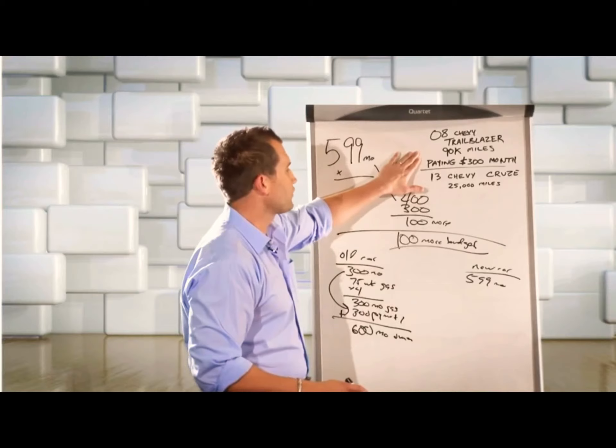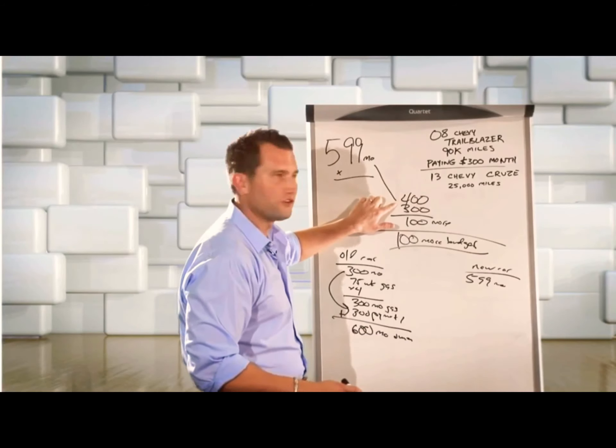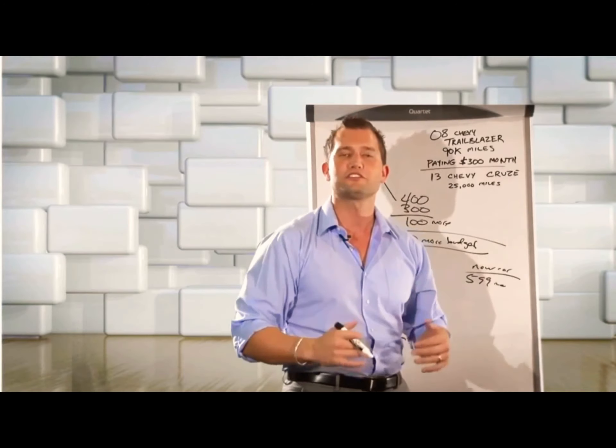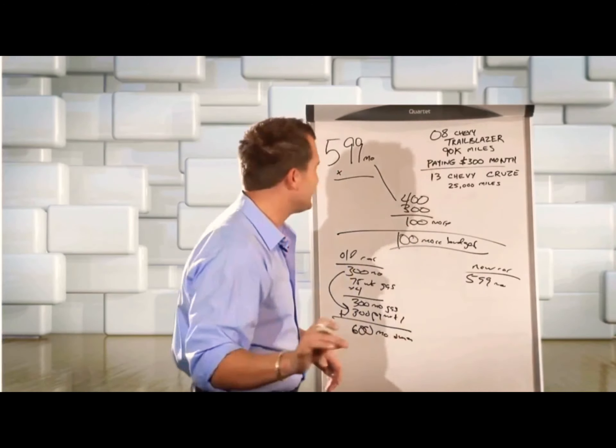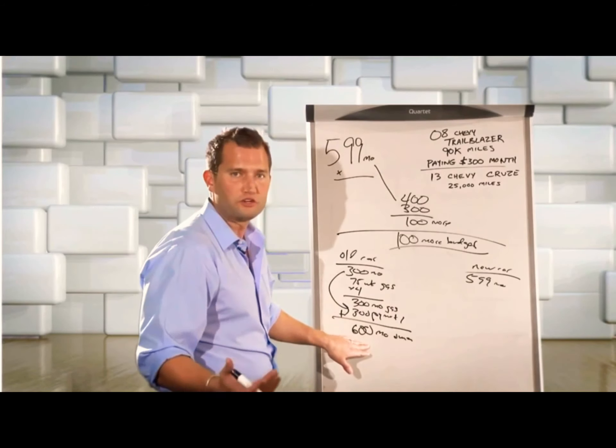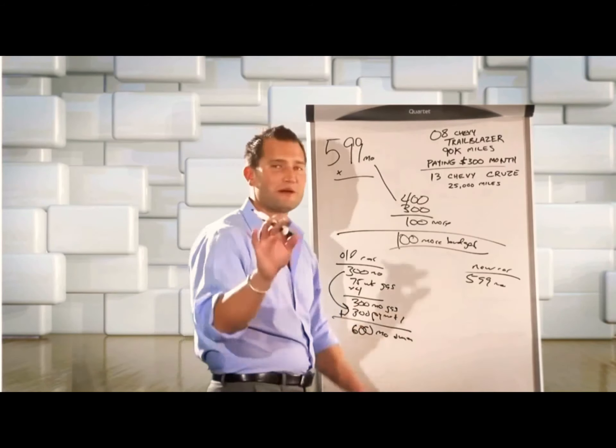Now, let me show you just prospectively so you can see what I'm doing here. I'm taking them from, they're paying $300, they think they can go to $400, and they're looking at the $599, and it seems like they're going up in money. They're not. That's why this is called money justification. Be deadly on every pencil. They're currently paying $600 a month to own their old vehicle between gas and payment.